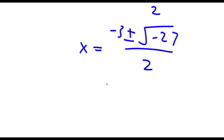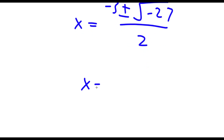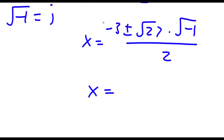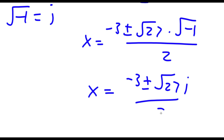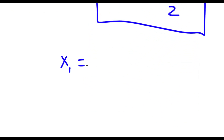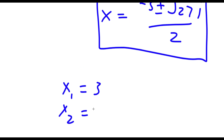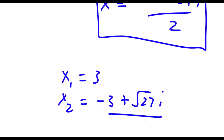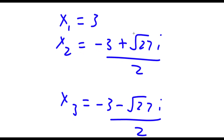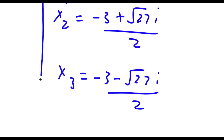Now, the square root of negative 27 I can rewrite as the square root of 27 times the square root of negative 1. And if you guys didn't already know, the square root of negative 1 is actually equal to the imaginary number i. So if I replace the square root of negative 1 with i, I get negative 3 plus or minus the square root of 27 times i, over 2. So these are two other solutions. My first solution is x equals 3. My second solution is negative 3 plus the square root of 27 times i, over 2. And my third solution is negative 3 minus the square root of 27 times i, over 2. So these are my three solutions to this problem.